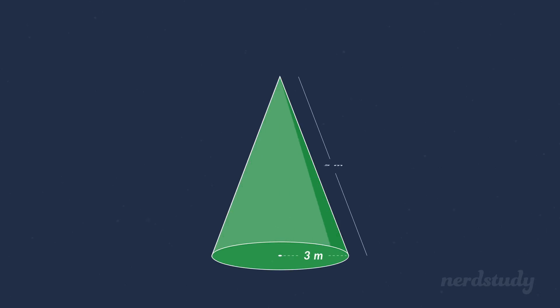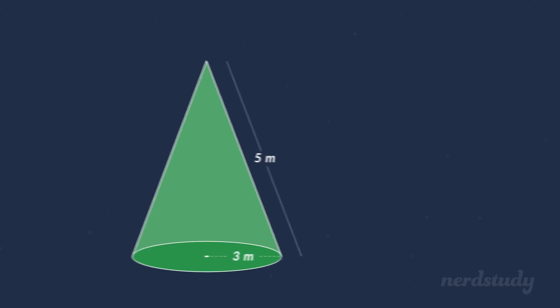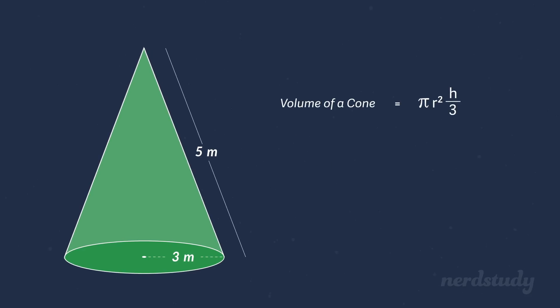How can we find the volume of this cone? Well, the formula is the following: volume of a cone equals pi r squared times h over 3. So we have the dimensions for r here, which is 3, but we know that our h is not 5 meters. And why?